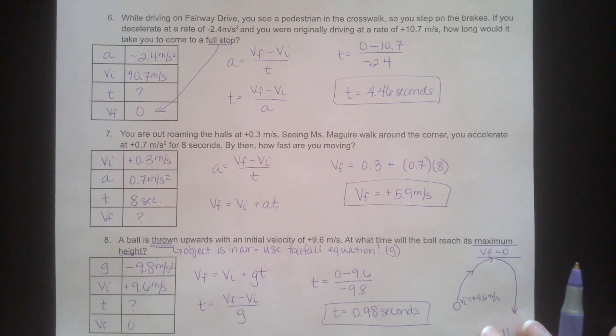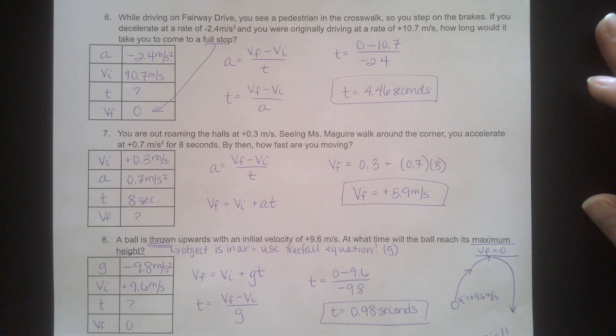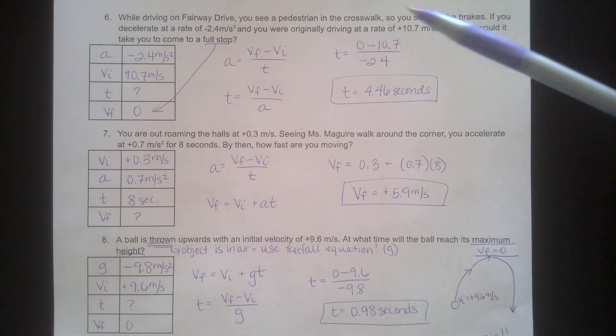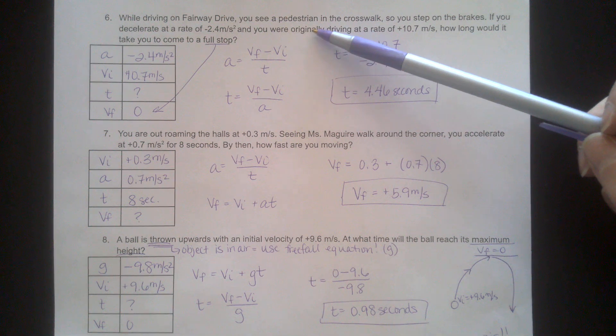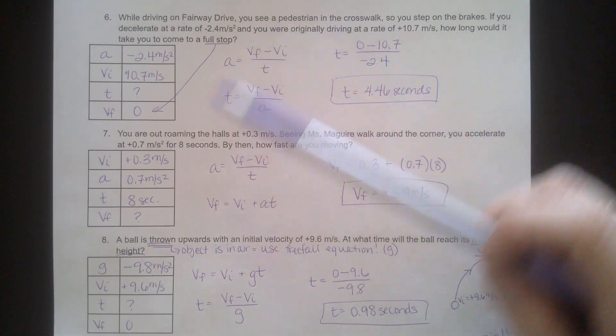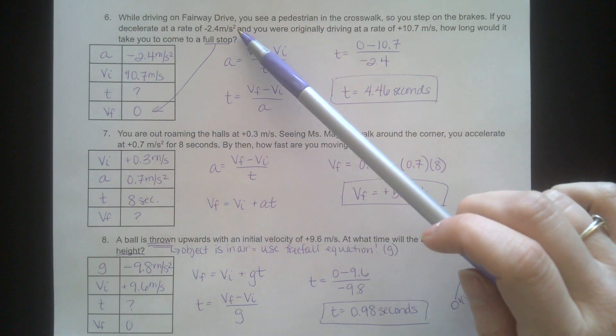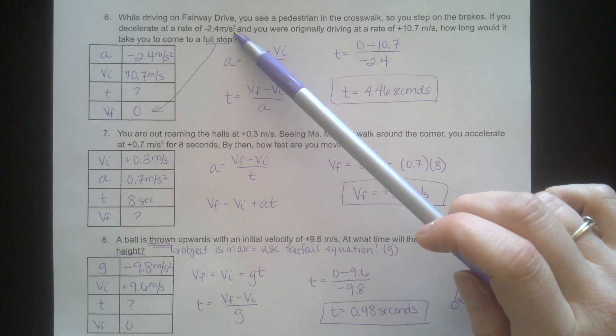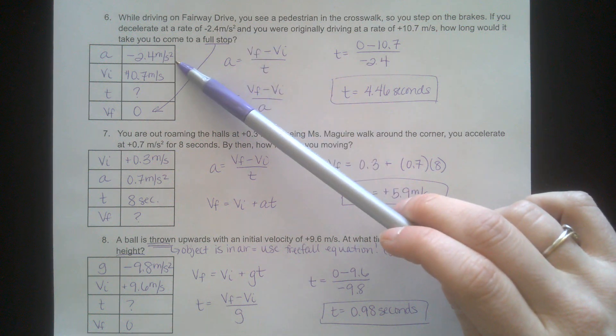Over here, you're on Fairway Drive. You're driving on a road horizontal motion, so you're going to use that original acceleration equation. You see a pedestrian in the crosswalk, so you need to stop quickly. A full stop means that your final velocity will be zero. You decelerate at a rate of negative 2.4 meters per second squared. That's an acceleration, so I'm going to put that in the A box.